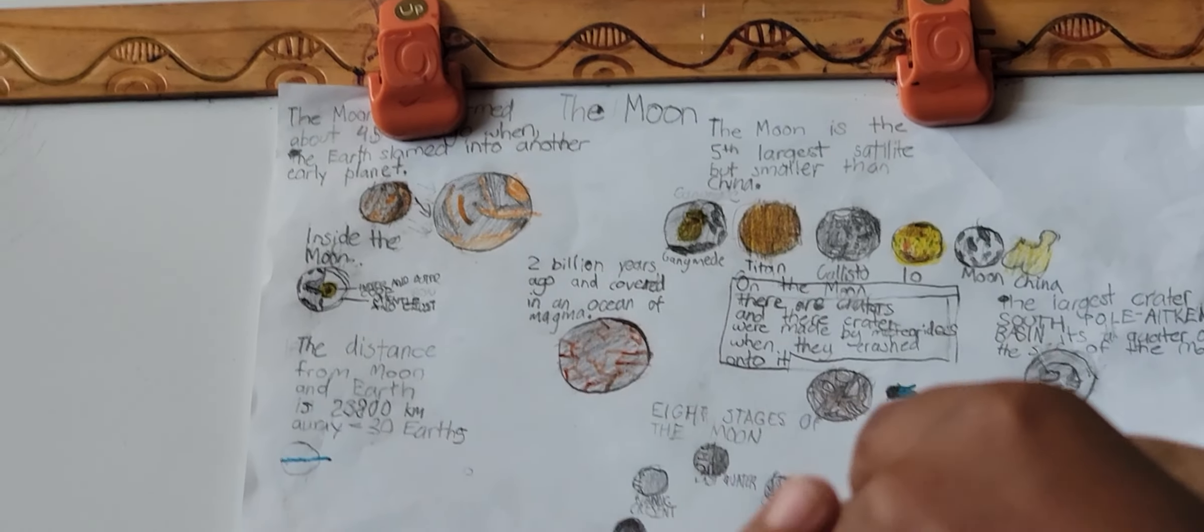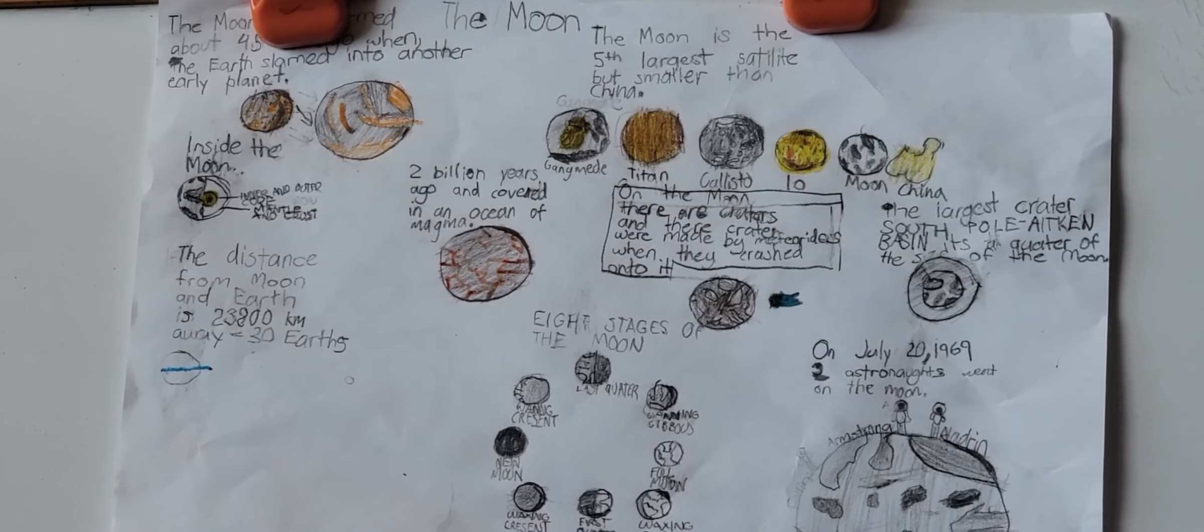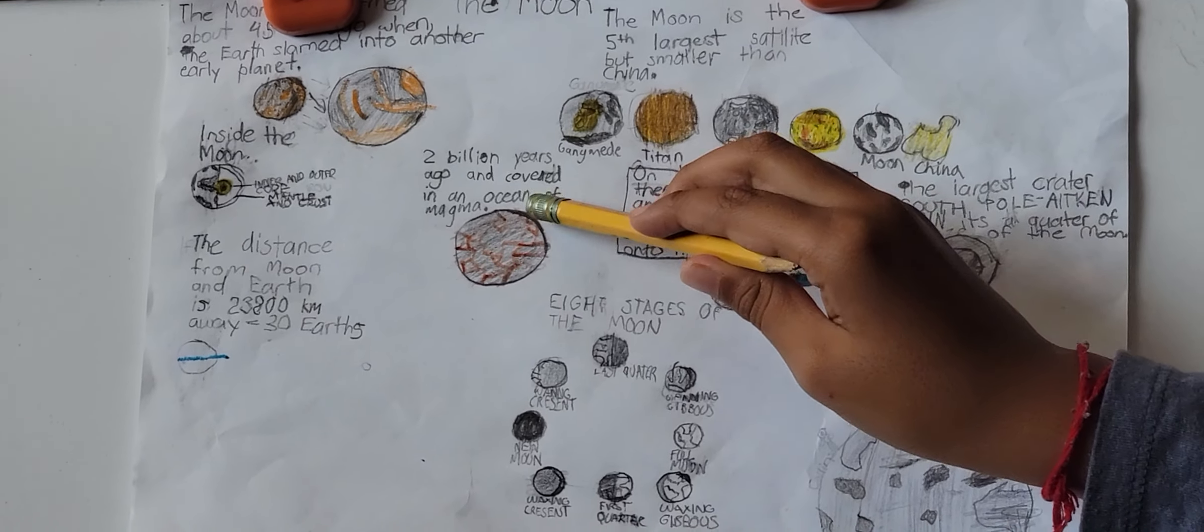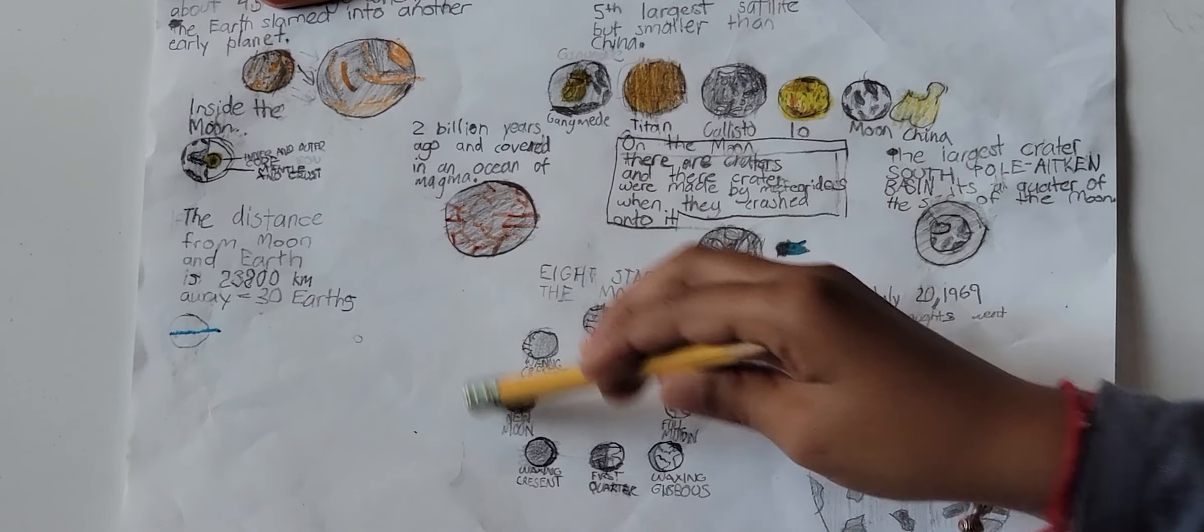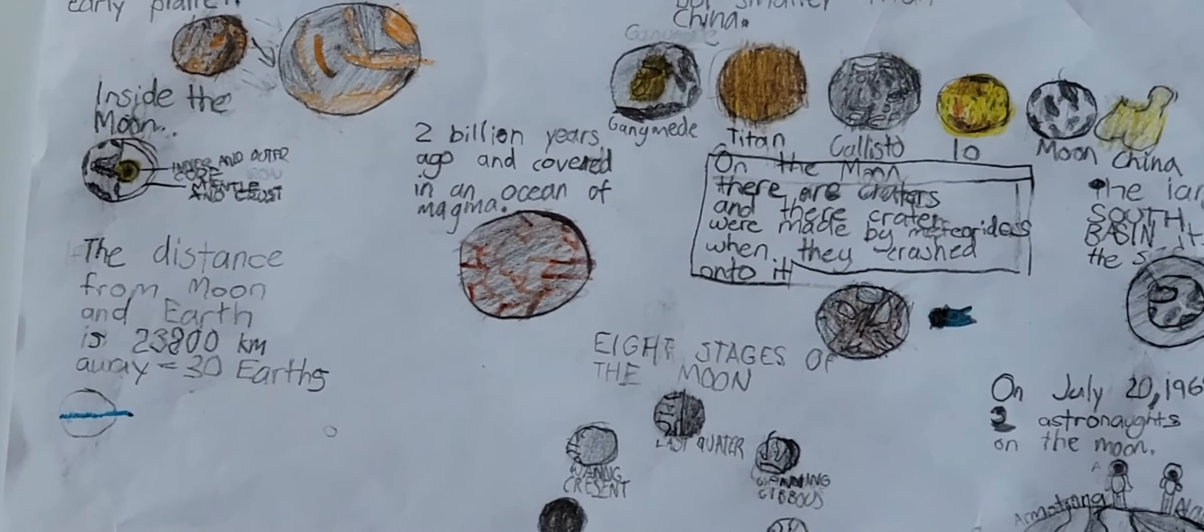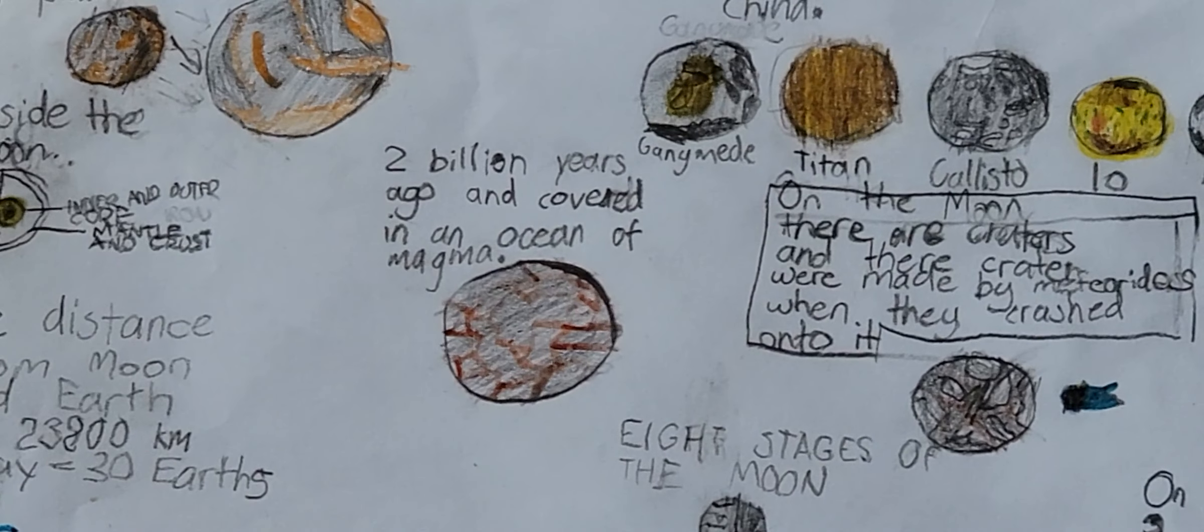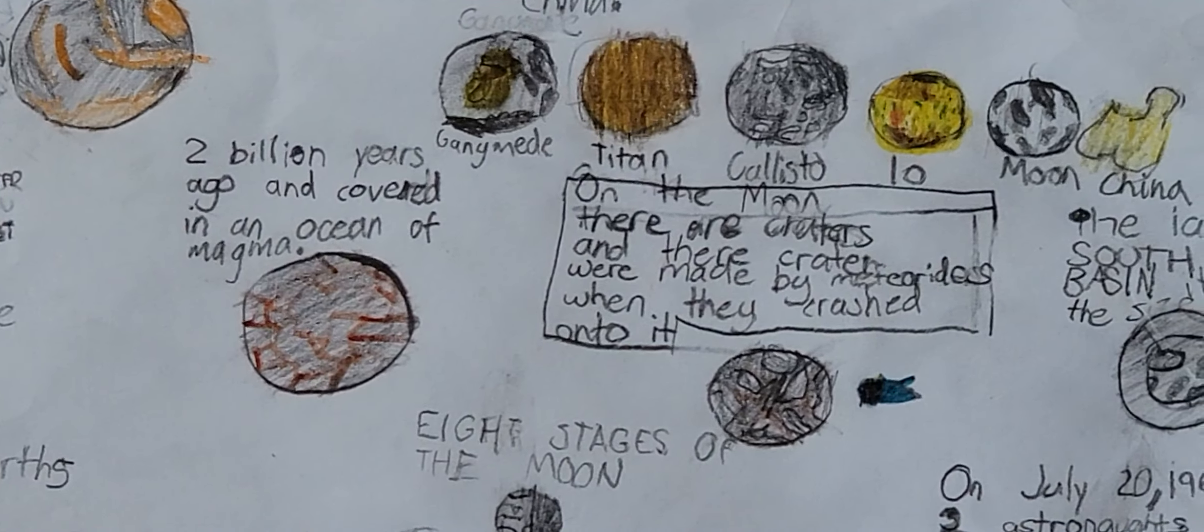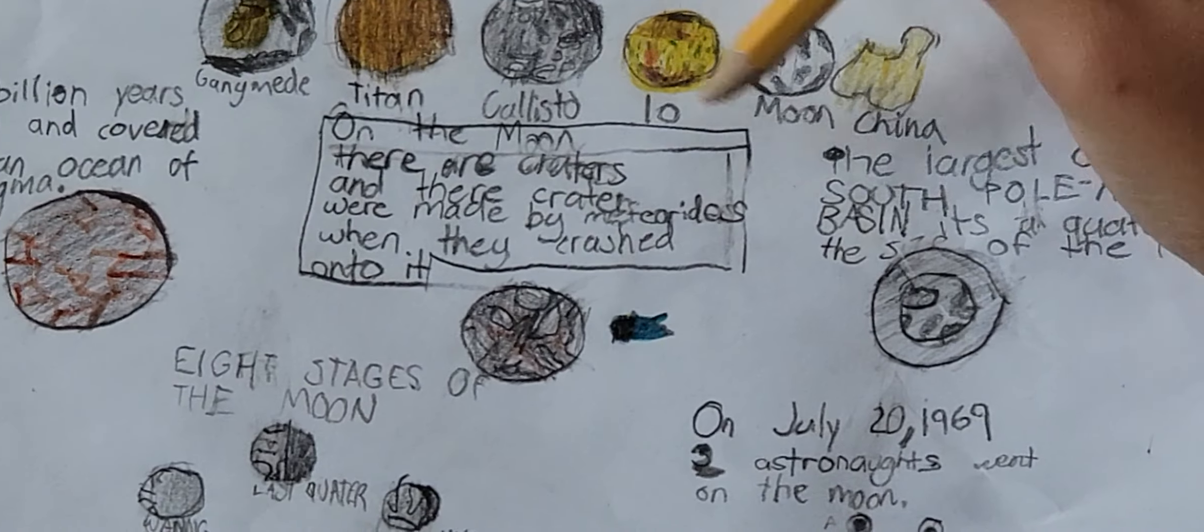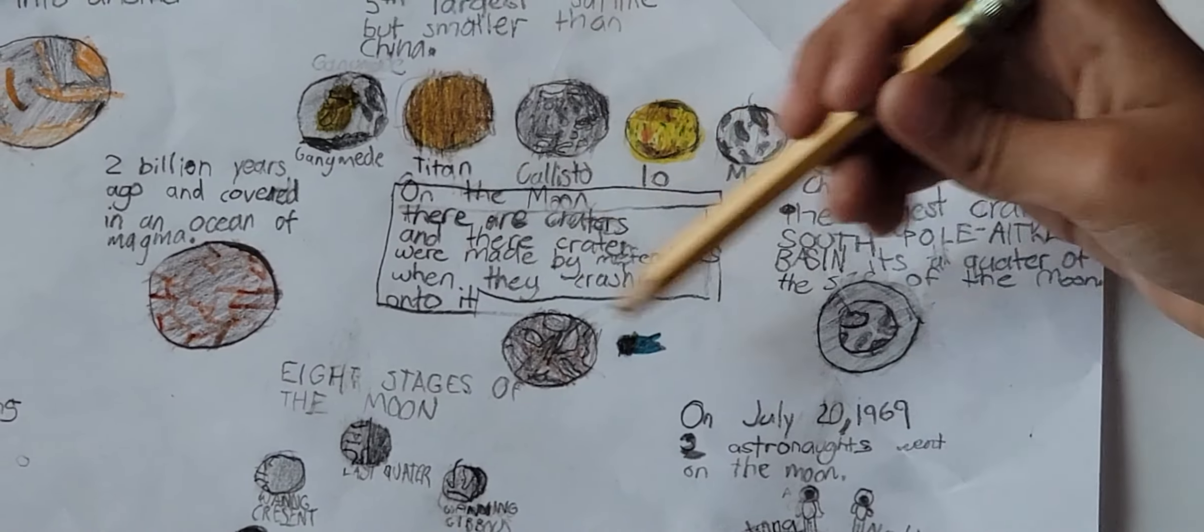Two billion years ago the moon was covered by an ocean of magma. So you see the fire, that's magma, and actually the magma might be water.